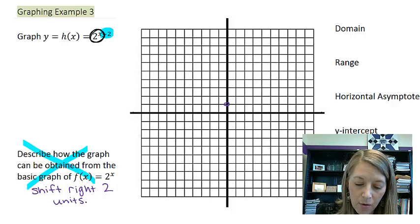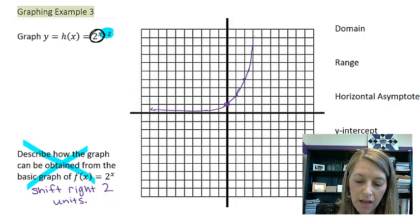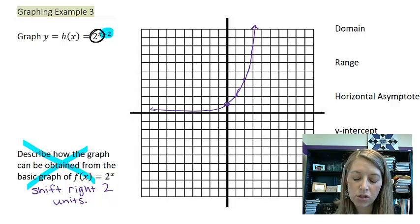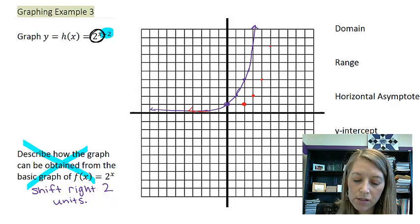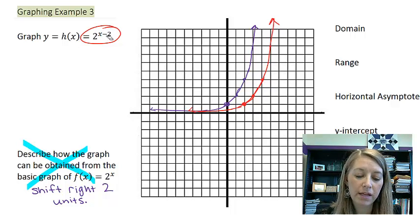So I have my basic graph that went through this intercept here. If I can plot some of these points. So this is my basic graph of 2 to the x. And now what I'm going to do is I'm going to shift it right two units. So I can take my intercept, shift it right two units. And I can take each of these points and shift it right two units.